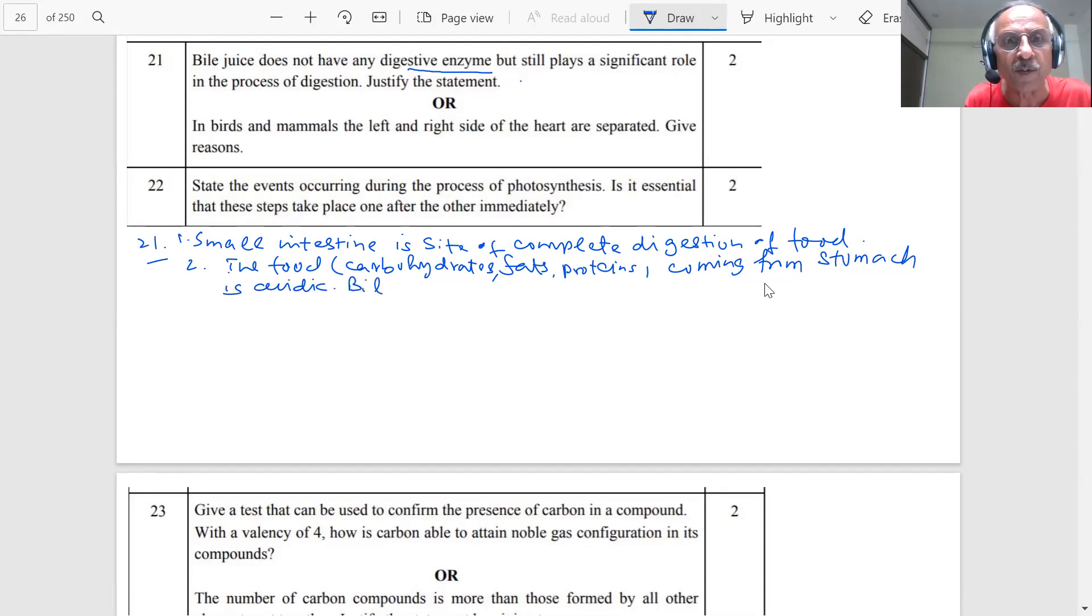Bile juice makes this food alkaline for pancreatic enzymes to act. This is one point, student.